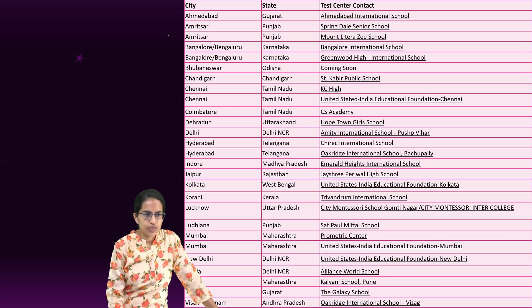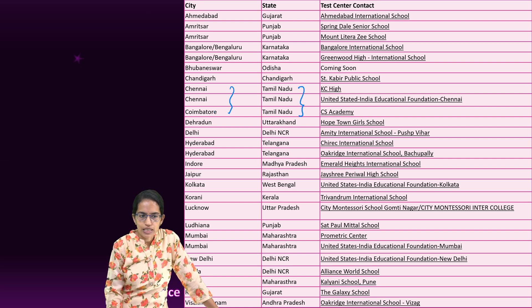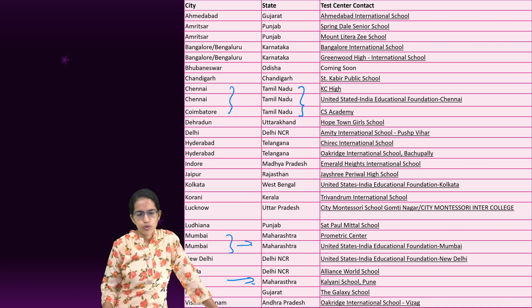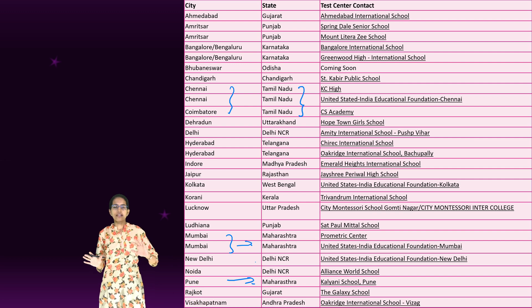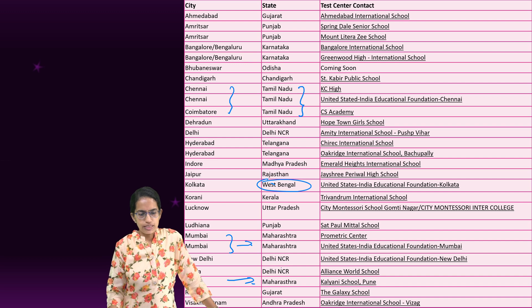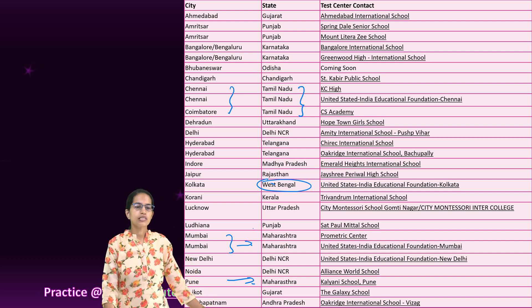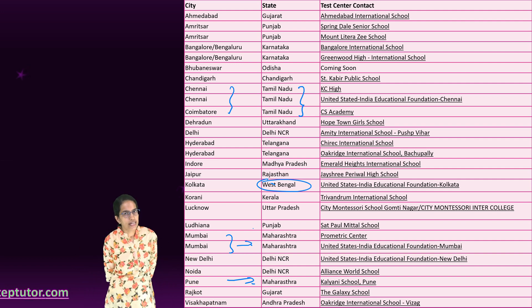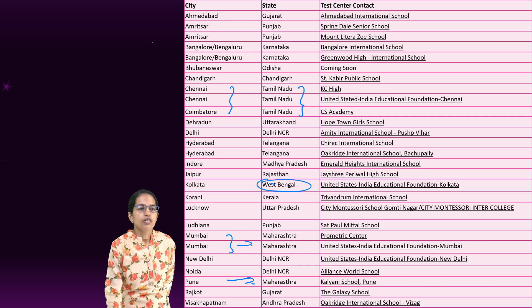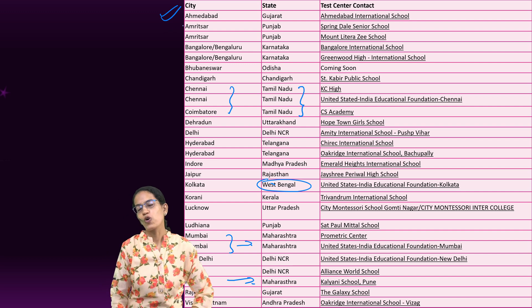In India, here is the complete list of centers. Some states have multiple centers — for example, Tamil Nadu has three centers: two in Chennai and one in Coimbatore. Maharashtra has two centers: one in Mumbai and one in Pune. There is a good distribution of centers across the country, so you won't have to travel far. Students from Northeast India would have West Bengal as their nearest center. Most students would get a center nearby, and the names of the centers are available in the list.